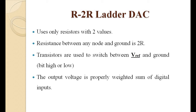So what are the specifications of the R-to-2R ladder DAC? The R-to-2R ladder DAC uses only resistors with two values: R and 2R, which is double of R. Only these two values are used for all the resistors, and the resistance between any node and ground is always 2R.